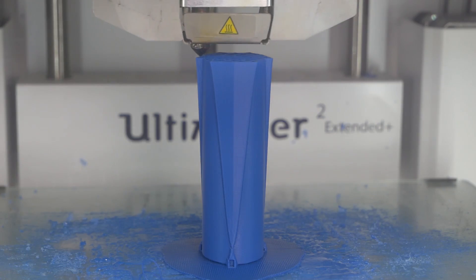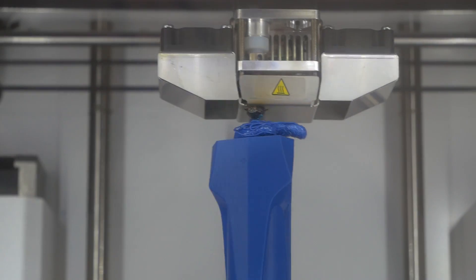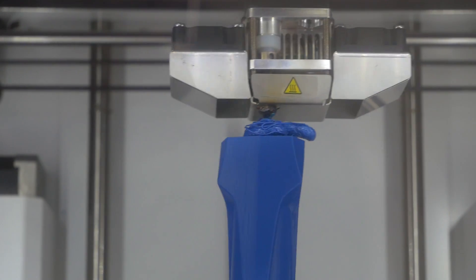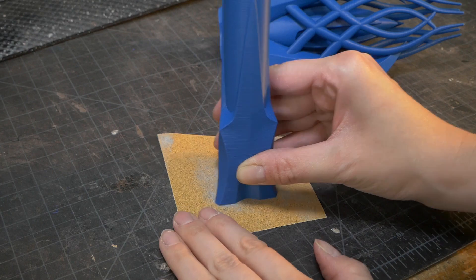I was using a raft for the prints, which broke off on the second half of the staff. The connection to the raft didn't seem to bond well, so I switched to a brim and that worked great.